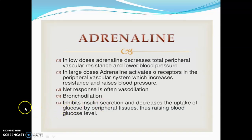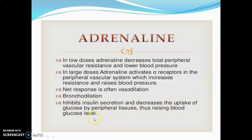Adrenaline in low doses decreases total peripheral vascular resistance and lowers blood pressure. In large doses, adrenaline activates alpha receptors in the peripheral vascular system, which increases resistance and raises blood pressure. The net response is often vasodilation and bronchodilation. Adrenaline also inhibits insulin secretion and decreases the uptake of glucose by peripheral tissue, thus raising blood glucose.